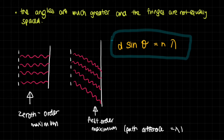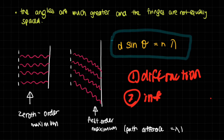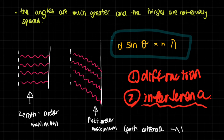Just like the Young double slit experiment, the diffraction grating also helps to prove that light is a wave. It shows this by demonstrating that light has diffraction effects — light spreads out over a long screen — and if it didn't diffract, this would never happen. It also shows interference because certain areas become very bright and certain areas become very dark. These bright areas we call maxima, or singular, maximum.